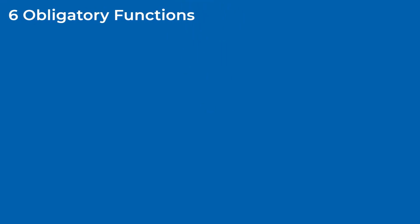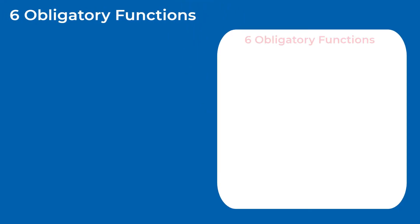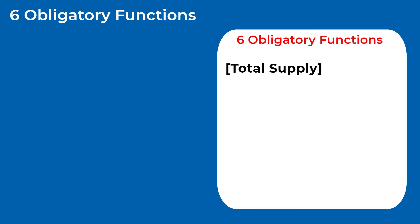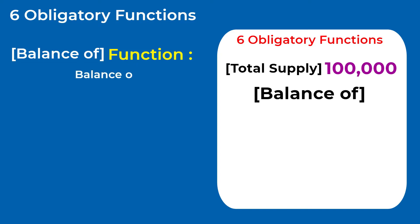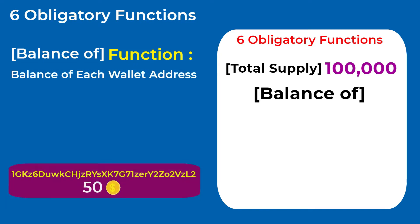After the three optional rules, you need to add the six obligatory functions to the smart contract. In the Total Supply function, you state the maximum total number of tokens you want the smart contract to create. When this limit is reached, no new tokens can be created, and no one can change this limit after the smart contract is deployed. The next function is the Balance Of function, which allows you to check the number of tokens someone has in their wallet.